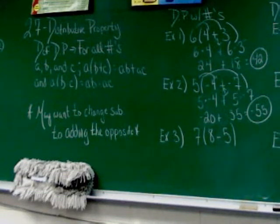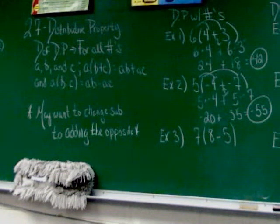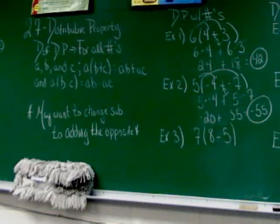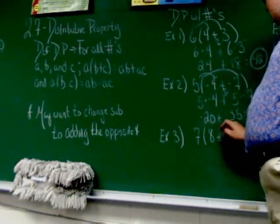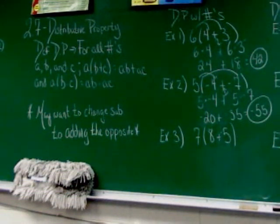The last one in that column with numbers says 7, and then in parentheses, 8 minus 5. I did this one to remind you that I have suggested that you change subtraction into adding the opposite, which is exactly how I'm going to start this problem. I'm going to change 8 minus 5 to 8 plus negative 5.